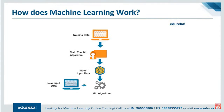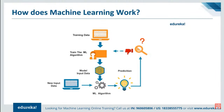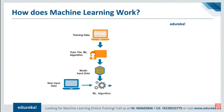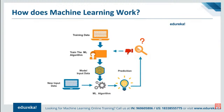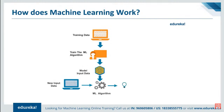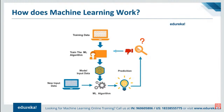Let's see in general how machine learning works. One approach is where a machine learning algorithm is trained using a labeled or unlabeled training data set to produce a model. New input data is introduced to the machine learning algorithm and it makes predictions based on the model. The prediction is evaluated for accuracy, and if the accuracy is acceptable, the machine learning algorithm is deployed. If the accuracy is not acceptable, the algorithm is trained again with an augmented training data set.